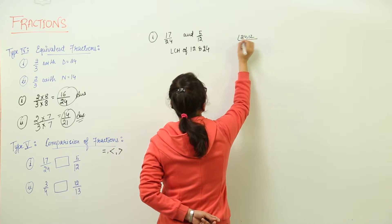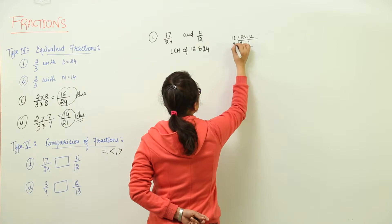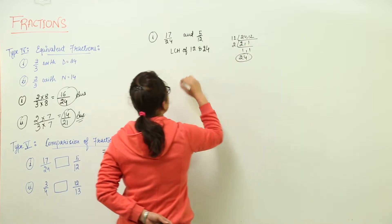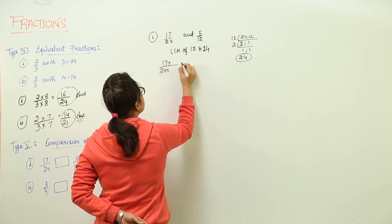Now 24 and 12, the LCM would be... 12 into 2 is 24, 12 into 1 is 12, 2 into 1 is 2. So 12 into 2 directly comes out to be 24. That means we have to make the denominator 24 for both the cases.